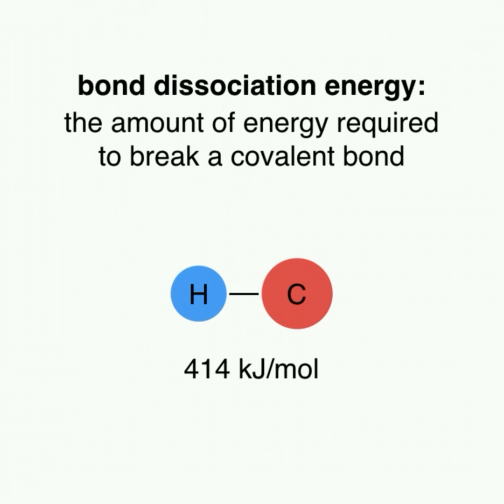Knowing the values of bond dissociation energies helps us determine the strengths of covalent bonds, as the amount of energy required to break a bond is proportional to the strength of that bond. Studying bond dissociation energies of various covalent bonds has shown us that three main factors determine the strength of a covalent bond.